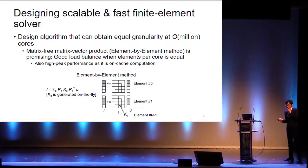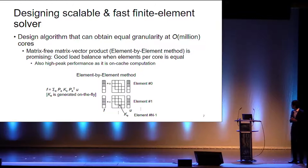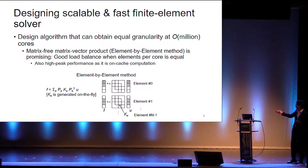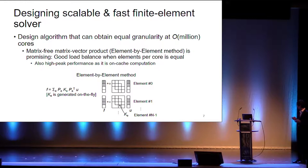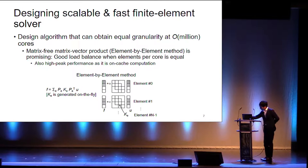We first think of designing a scalable and fast finite element solver targeting machines with order of a million cores, so we want to design an algorithm that can obtain equal granularity at this number of cores. What we think of is using the matrix-free matrix-vector product — which we call the element-by-element method. Instead of storing the global sparse matrix on memory, we compute local element matrices on the fly and add them into the left-hand side vector when computing matrix-vector products. This method is good for load balance when we distribute elements to nodes with equal numbers.